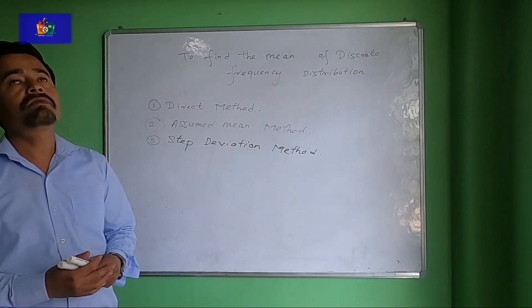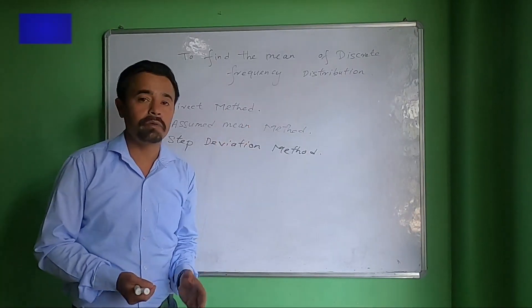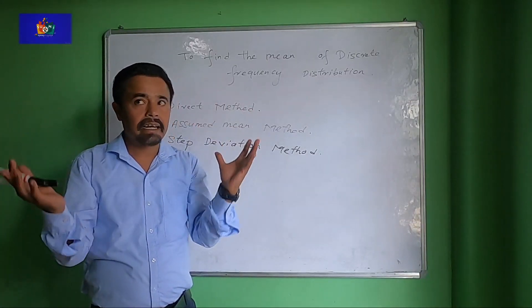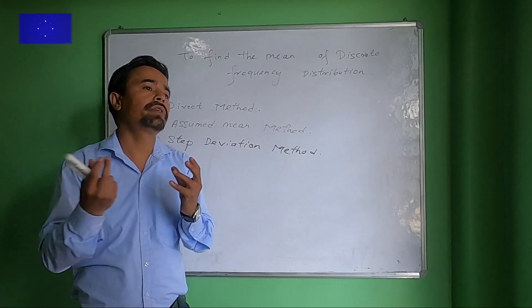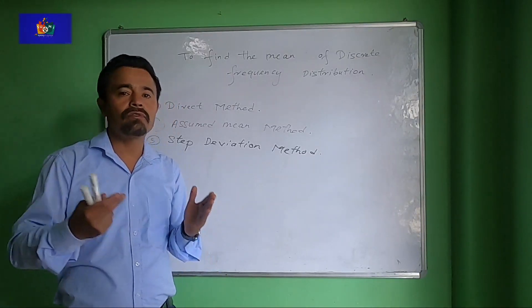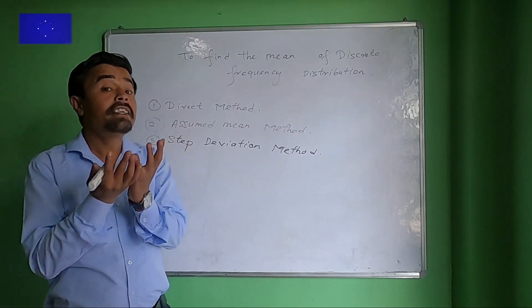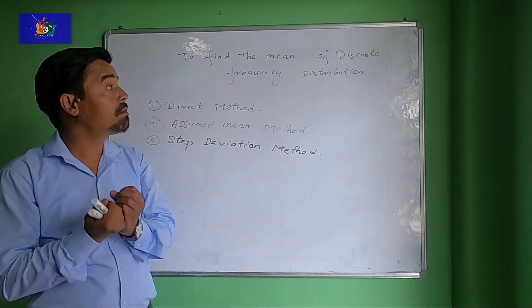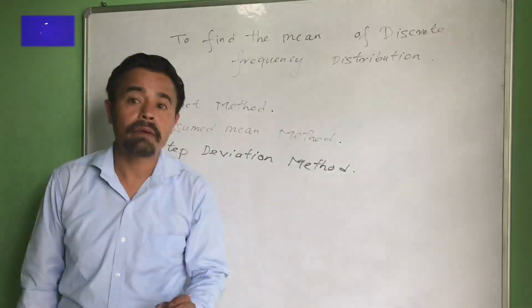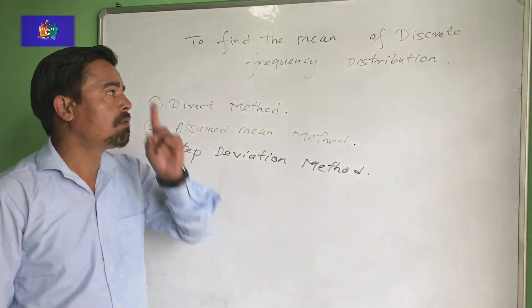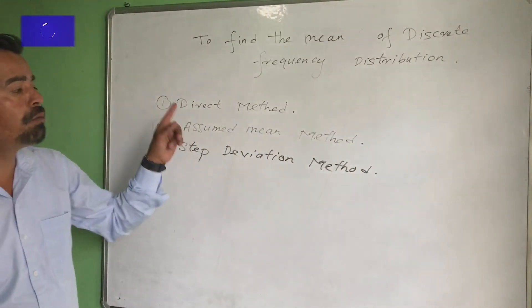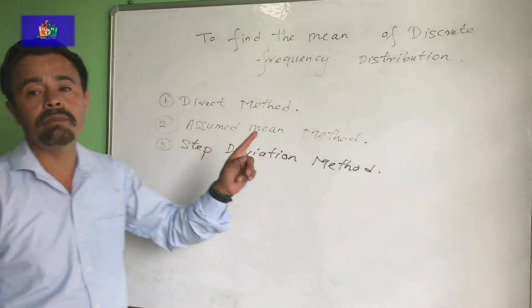Next topic is discrete frequency distribution. Data related to intervals like 0 to 10, 10 to 20, 20 to 30 — this data is related to intervals. Discrete frequency distribution has three methods: 1. Direct method, 2. Assumed mean method, and 3. Step deviation method.